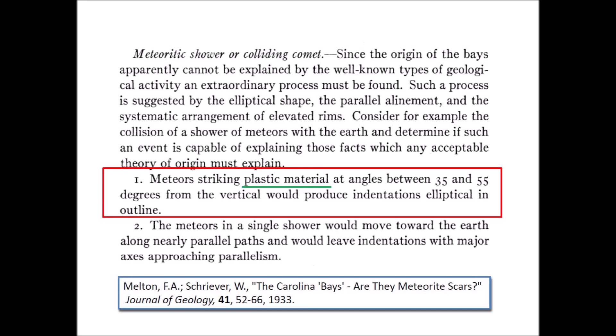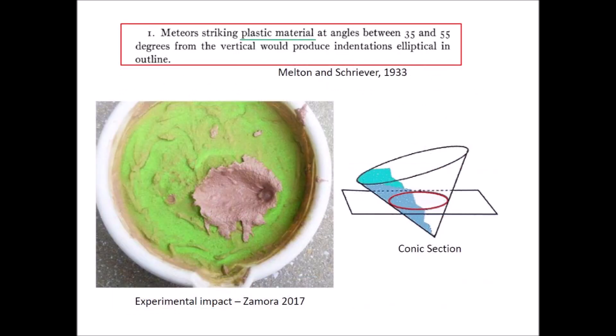Melton and Shriver make a case for their hypothesis of collisions by a shower of meteors by pointing out that meteors striking plastic material at angles between 35 and 55 degrees from the vertical would produce indentations elliptical in outline. However, they did not explain how the terrain of the Atlantic coastal plain could become a plastic material suitable for creating the elliptical features, and they did not mention soil liquefaction at all.